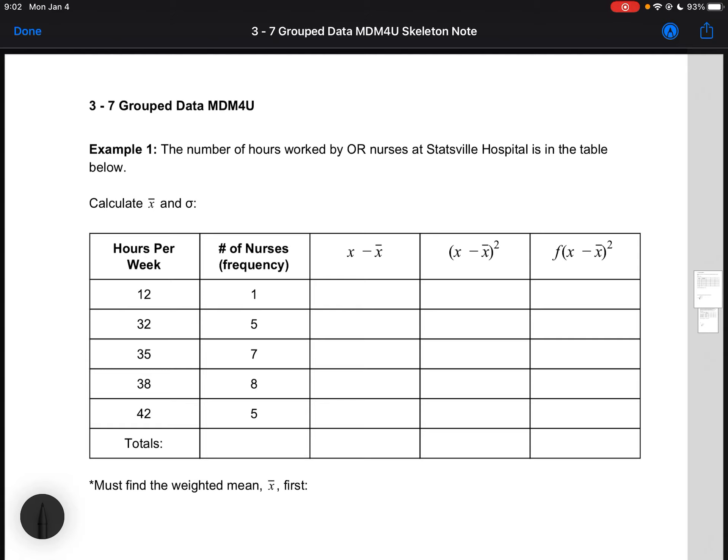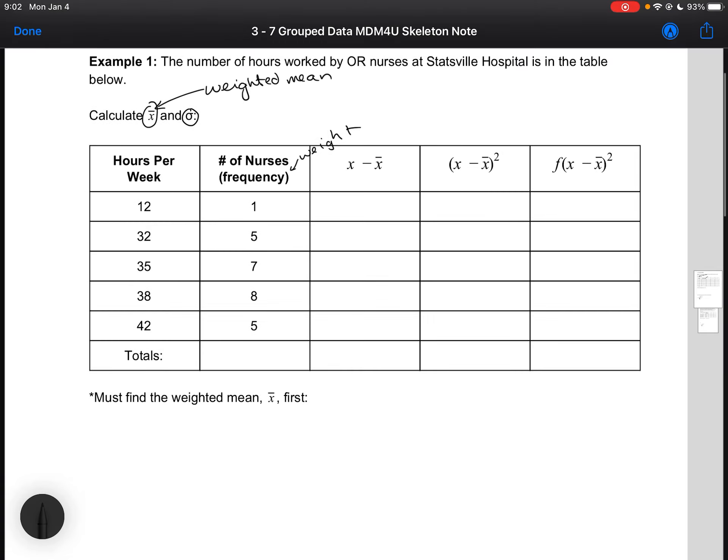So let's look at this first example. The number of hours worked by OR nurses at Statsville Hospital is in the table below. It's asking us to calculate the mean and the standard deviation. Now this is actually going to be our weighted mean because we have a frequency table, and our frequency is really going to be our weight. So let's find that first.